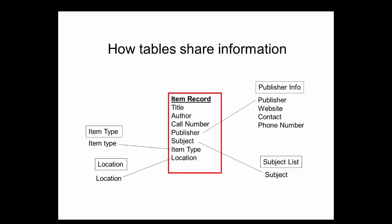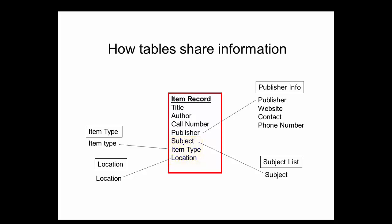How exactly do tables in a database link to and communicate with each other? Simply put, two tables in a database can talk to each other if they have a category or field in common. The item type, location, and subject list tables are pretty bare bones — they only contain one field apiece. But what is crucial is that each of these fields also appears in the central table, the complete bibliographic record. The source tables feeding information into the central table are sometimes referred to as parent tables, and the tables feeding from that source table are referred to as child tables.